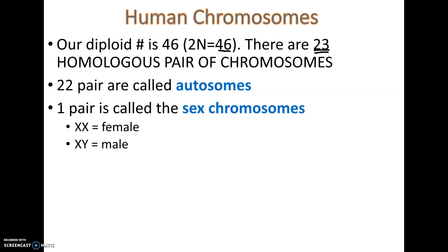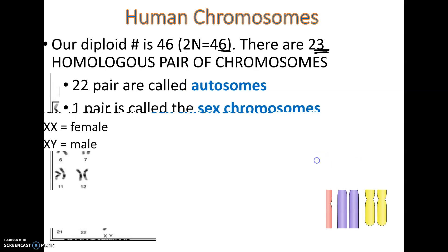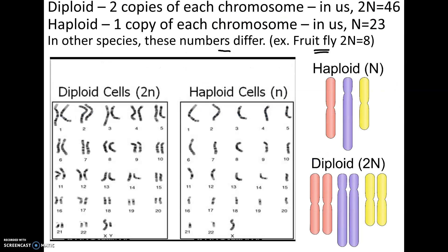Not every organism determines sex based on chromosomes. In alligators, the temperature of the nest determines sex — above a certain temperature they come out male, below it they come out female. In certain fish species, when a dominant male dies, the largest female turns into a male. However, in mammals, as far as we know, XX is female and XY is male.